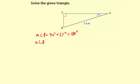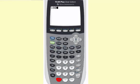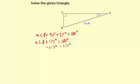So measure of angle B plus 117 degrees equals 180 degrees. And subtract 117 degrees from both sides, 180 minus 117, 63 degrees. So measure of angle B is 63 degrees.